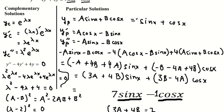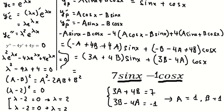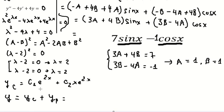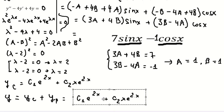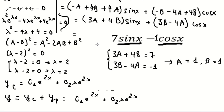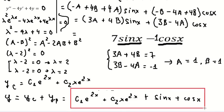So for yp, we have sin(x) plus cos(x), because we put 1 in for both A and B. Now we have the final answer: y equals yc plus yp, which is c₁e^(2x) plus c₂xe^(2x) plus sin(x) plus cos(x). This is the end. Thank you for watching.